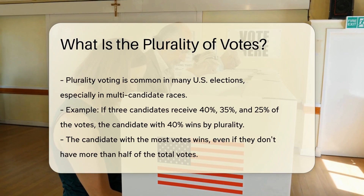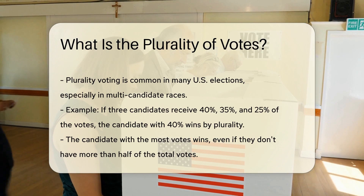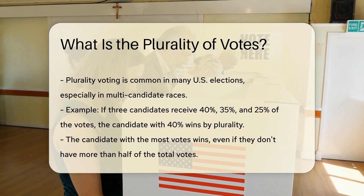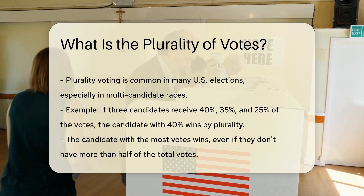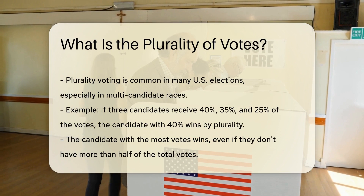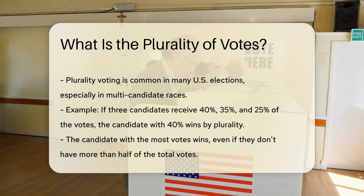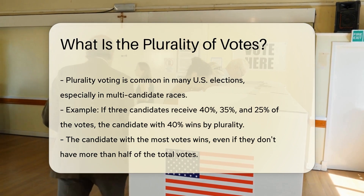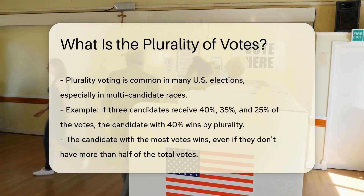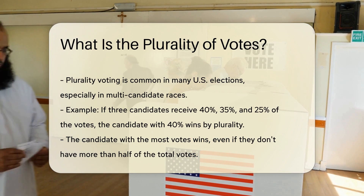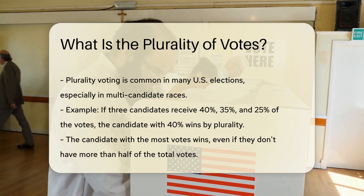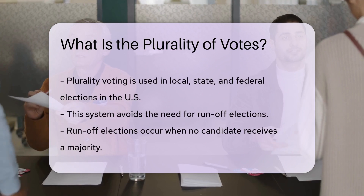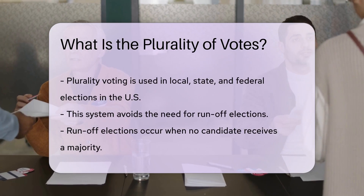This system is common in many U.S. elections, especially in multi-candidate races. For example, if three candidates receive 40%, 35%, and 25% of the votes, the candidate with 40% wins by plurality. This candidate has more votes than any other, but not more than half of the total votes.